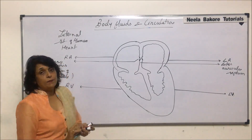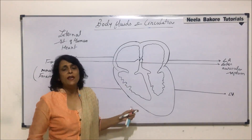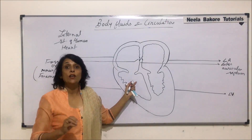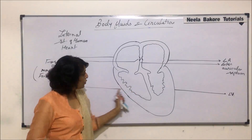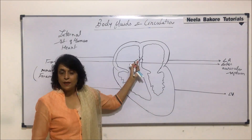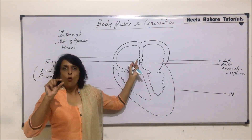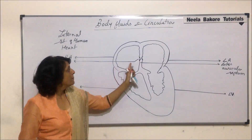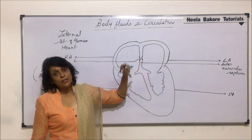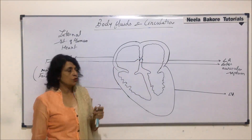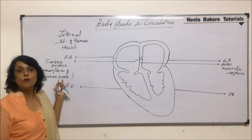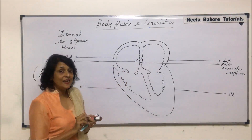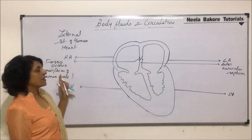Many times we hear people saying that a child has a hole in the heart. Now where is that hole? It is not in the wall — they are talking about the same thing. Sometimes what happens is this opening fails to close and that opening remains, so even after birth mixing of blood takes place. That is when the term 'hole in the heart' is used — they are actually talking about foramen ovale. After birth this opening closes, but we see a depression which is known as fossa ovalis.